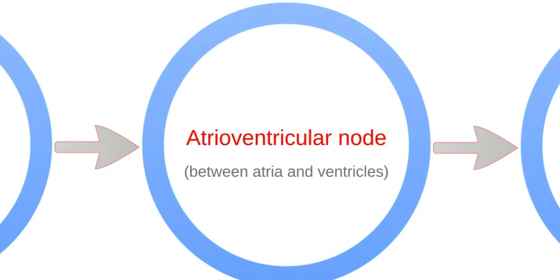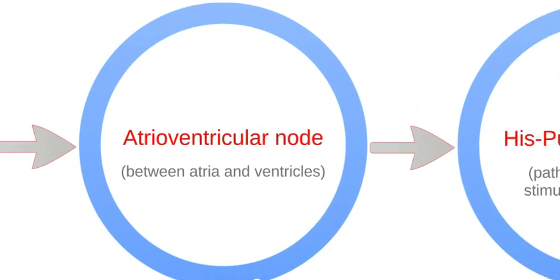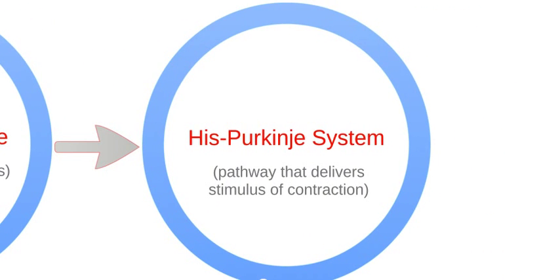This pulse then travels to the atrioventricular node, or AV node, which lies between the atria and ventricles. After remaining there briefly, it moves on to the HIS-Purkinje system, which is the group of cells that branches into the left ventricle and right ventricle and stimulates them to contract and pump blood.